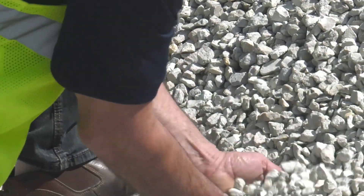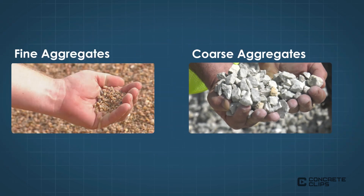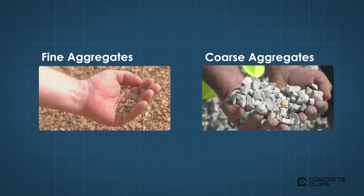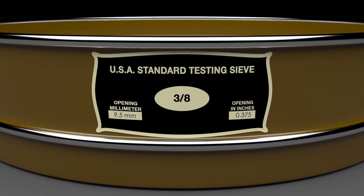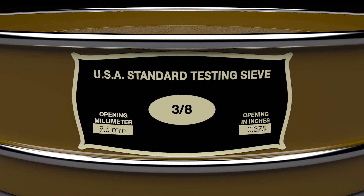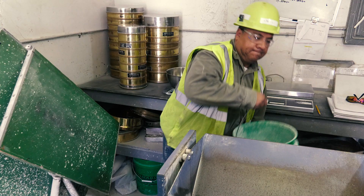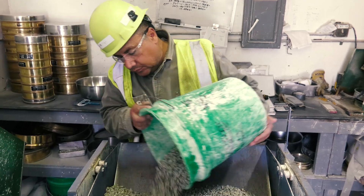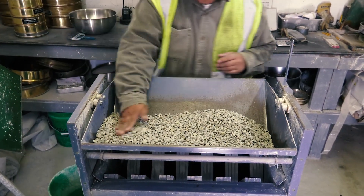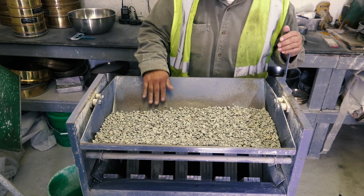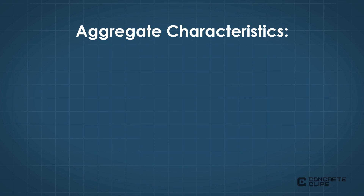Aggregates used in concrete can be divided into two broad categories: fine and coarse. Fine aggregates consist of natural sand or crushed stone passing through the 3/8-inch sieve, but mostly less than 0.2 inches and retained on the No. 200 sieve. Coarse aggregates consist of gravel or crushed stone, generally greater than 0.2 inches and typically ranging from 3/8-inch to 1.5 inches.